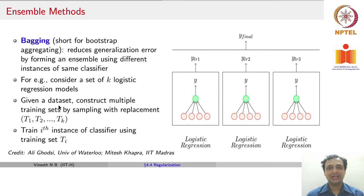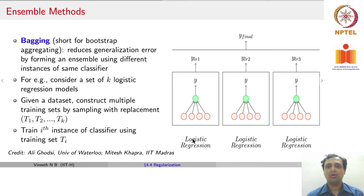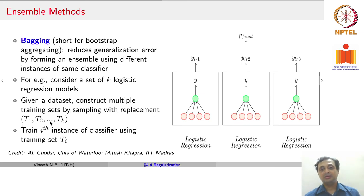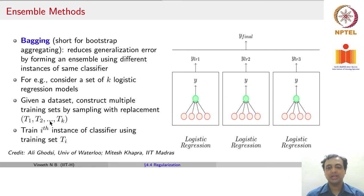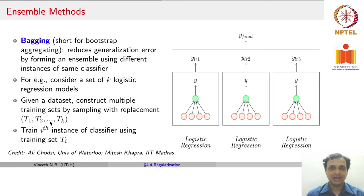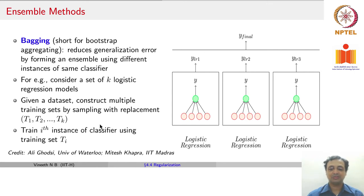Bagging, which stands for bootstrap aggregating, is an ensemble method in traditional machine learning. Given a training dataset, you construct multiple training sets by sampling with replacement. You construct k different datasets from your original dataset by sampling with replacement — if you had 10,000 data points, you take 1,000, train a model, replace them, take another 1,000. You can train as many models as you like by sampling with replacement, and each model is trained with the corresponding sampled training dataset, giving you k models.